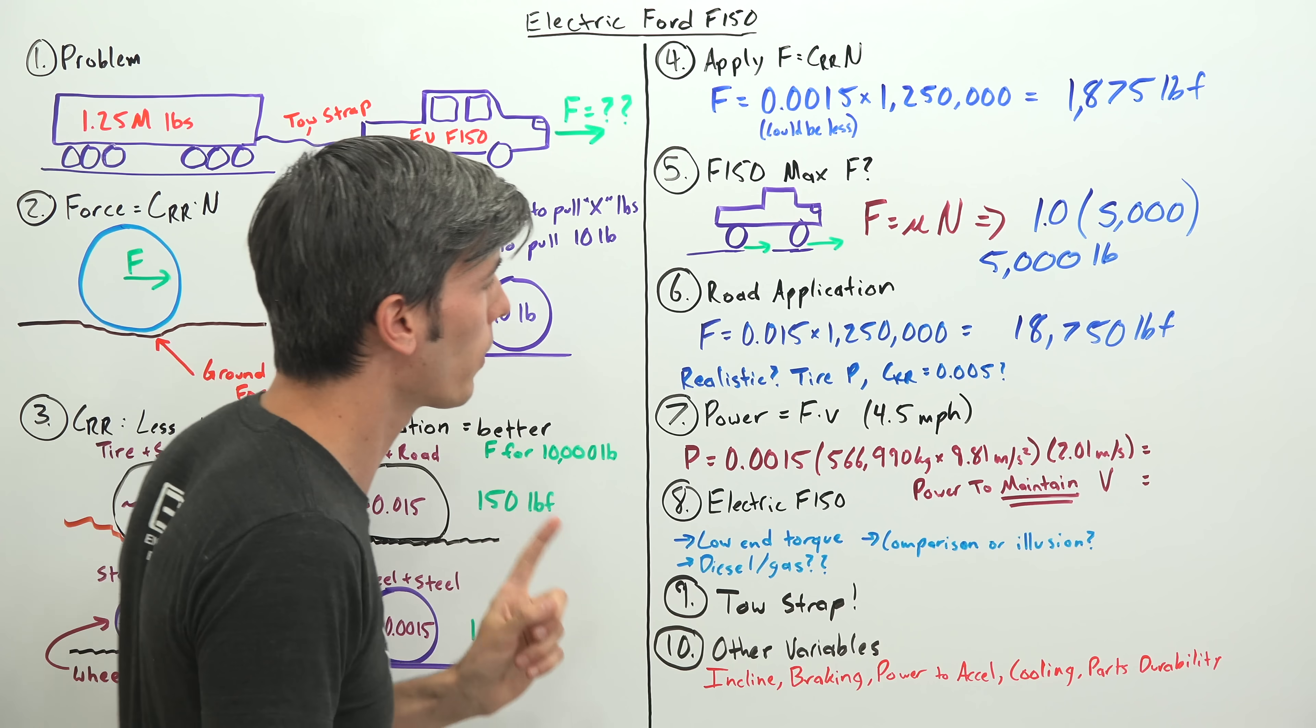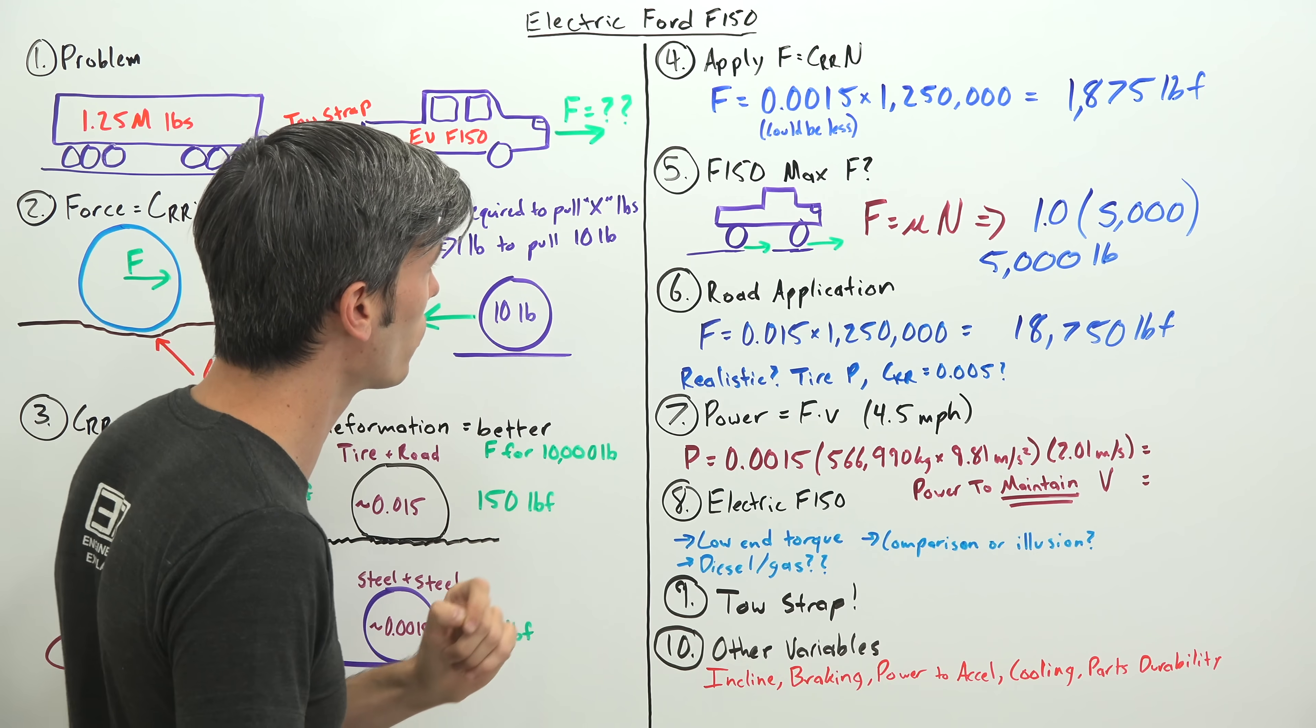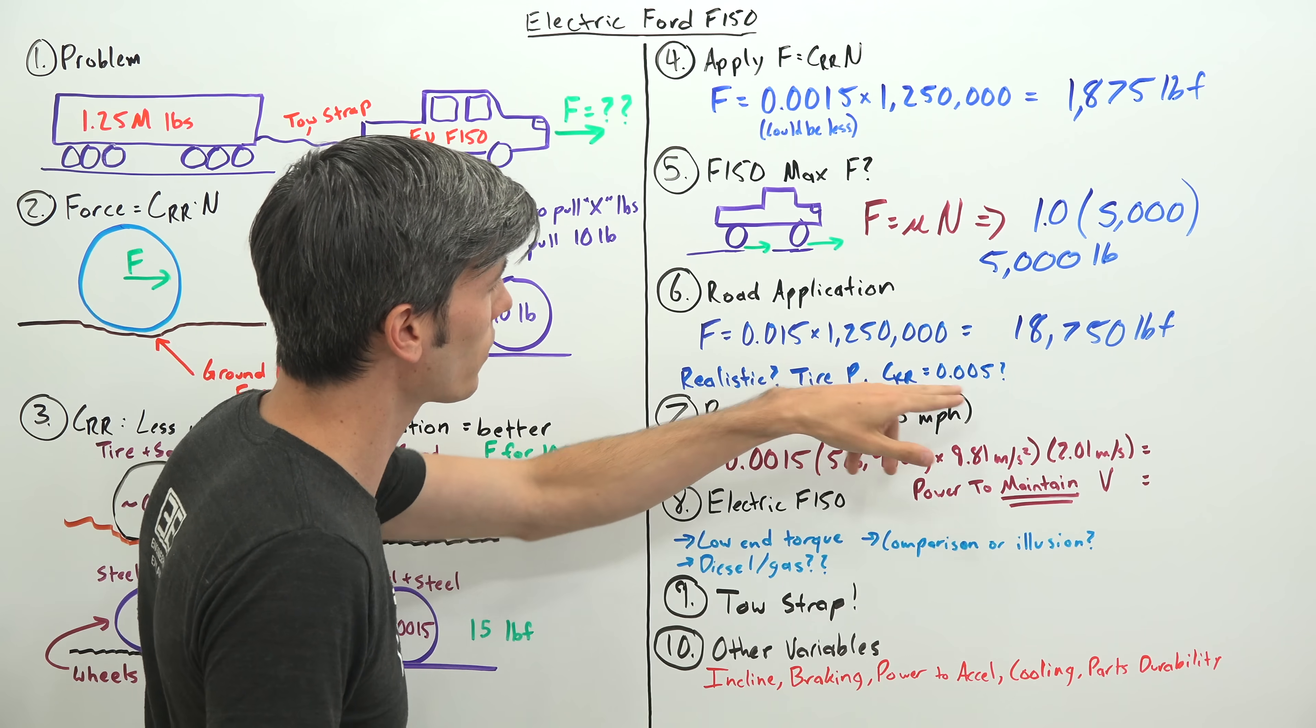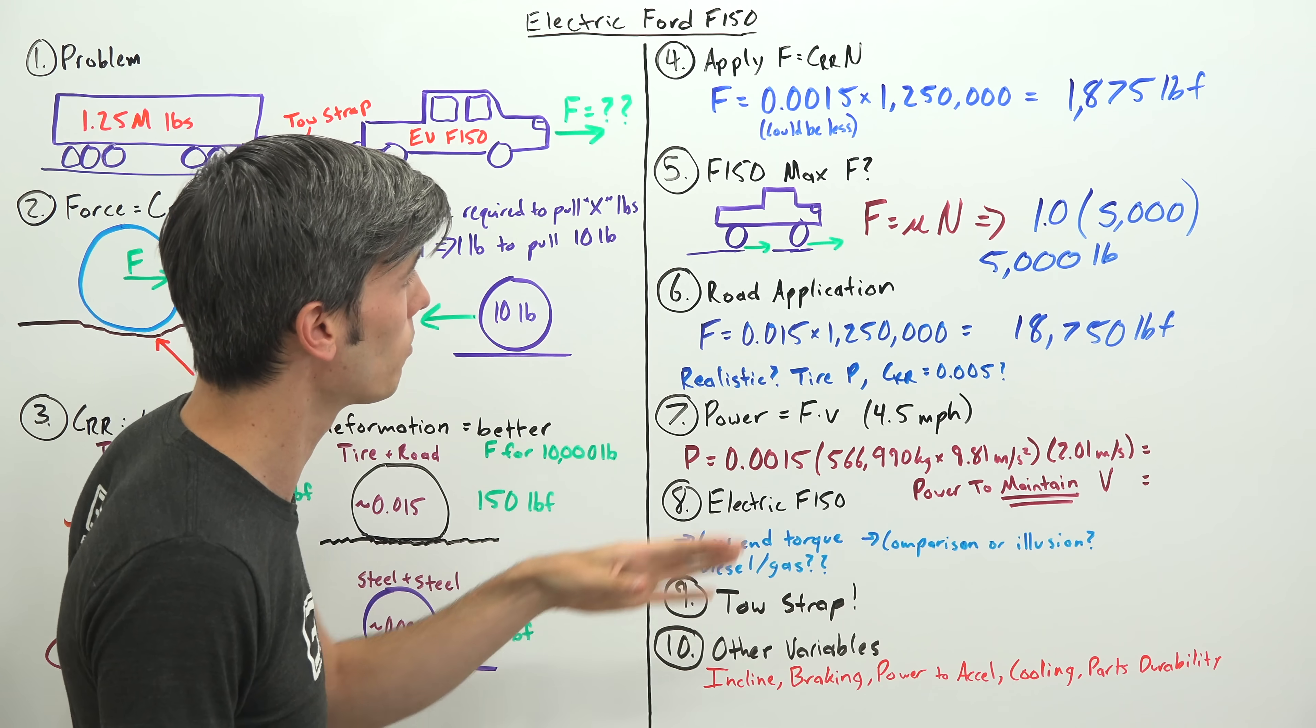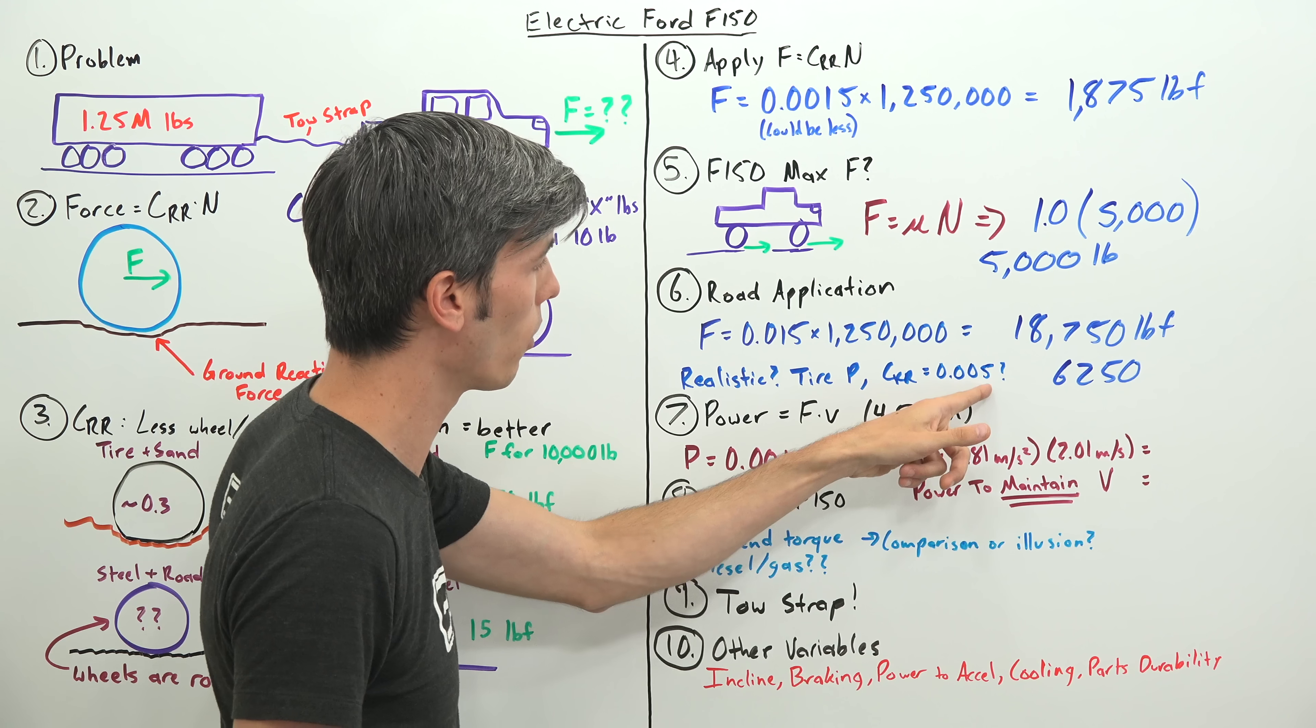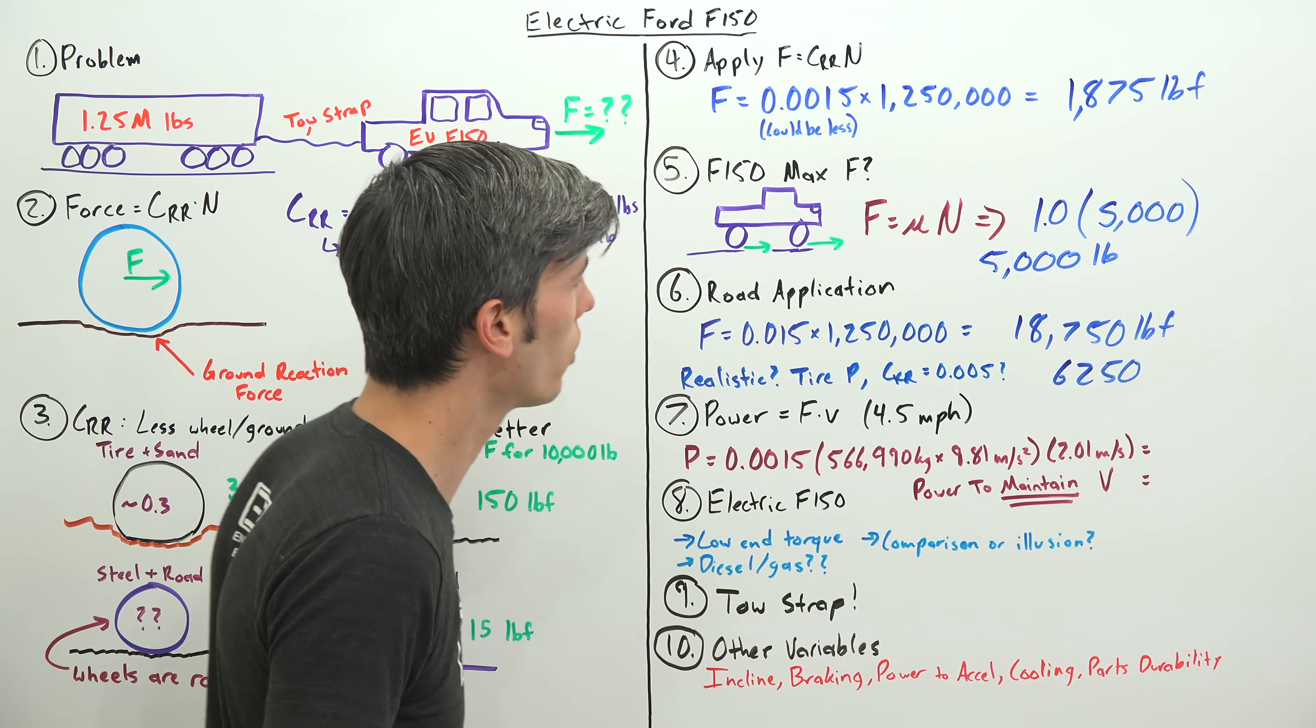Now realistically, as tire pressures go up, which you would need to do if you had a crazy high load like 1.25 million pounds, then the rolling resistance coefficient is going to decrease. And so as a result of that decreasing coefficient of rolling resistance, this number will be less. But even if you were to chop that by a third, you would be at 6,250 pounds. So if you had a coefficient of rolling resistance of 0.005 instead of 0.015, one third of that, you still don't have enough force.